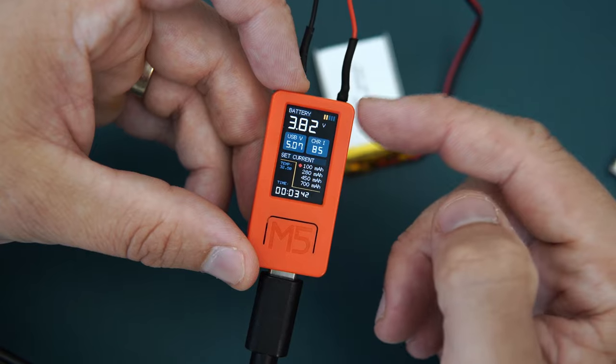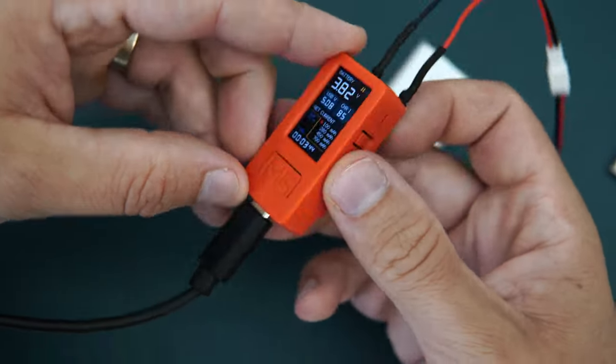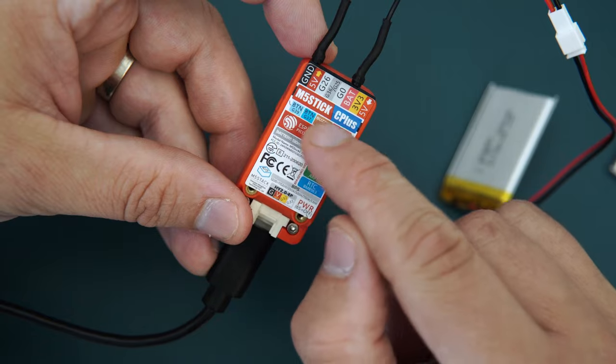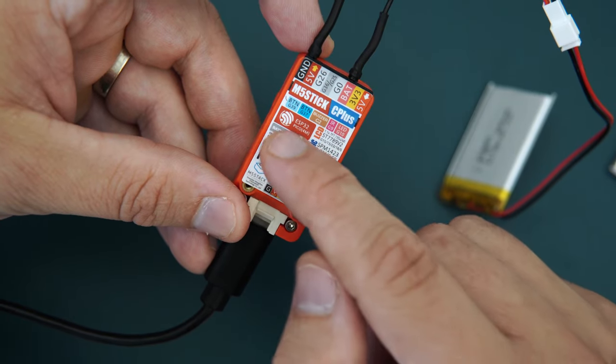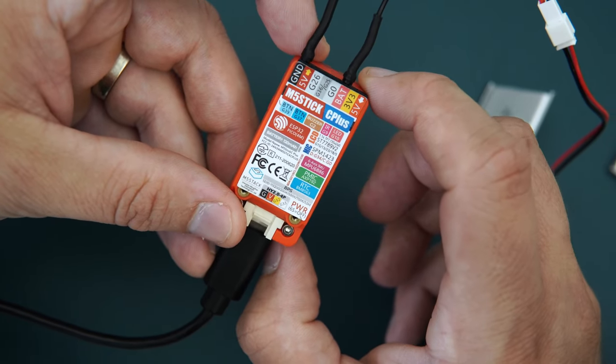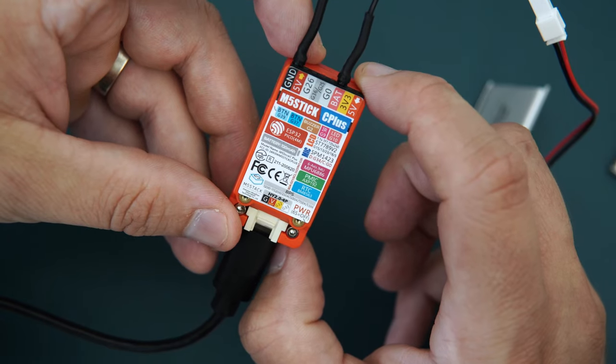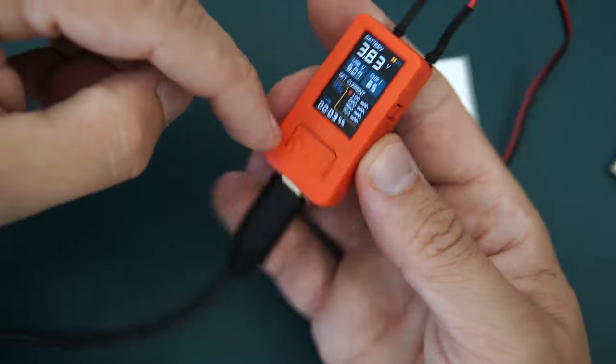Do you remember this guy? This is M5 Stick C Plus. This is an ESP32 development board made by M5 Stack. It has a built-in display, two push buttons, real time clock,